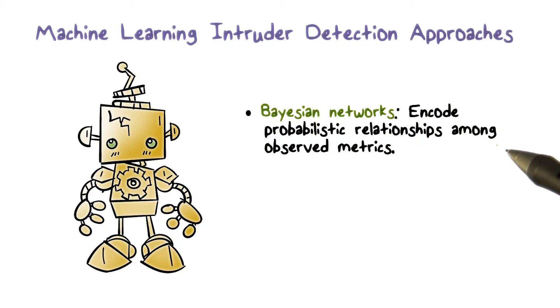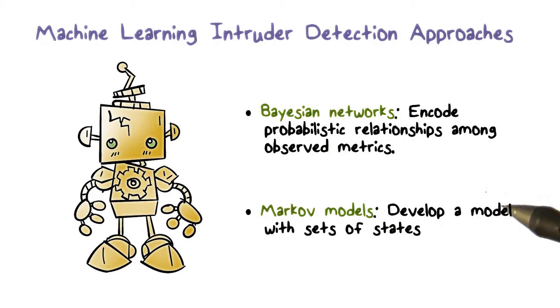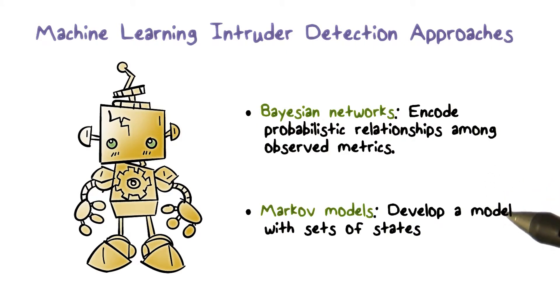If a low probability activity takes place, it is an anomaly. Markov models: a Markov model is a set of states that are connected by transitional probabilities.